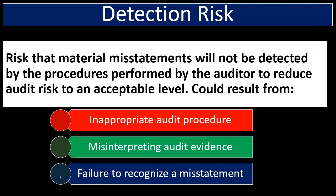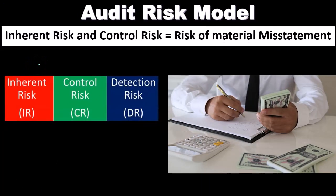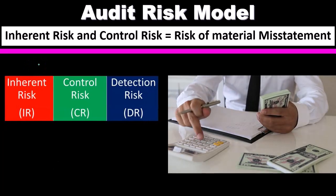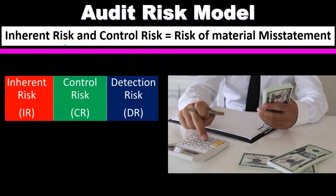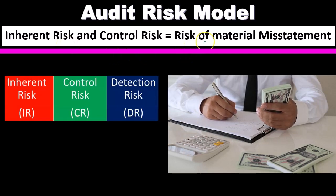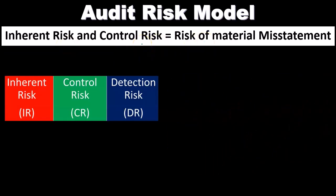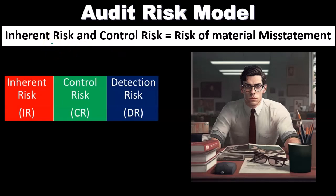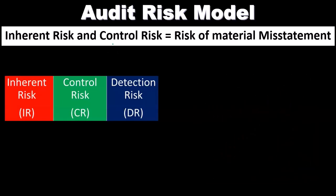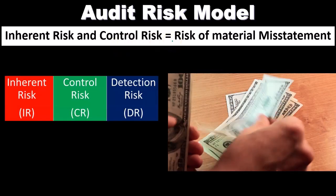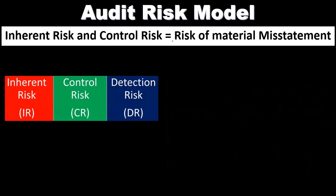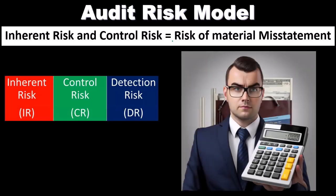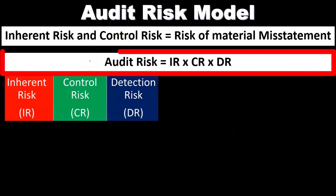In the audit risk model formula, inherent risk times control risk equals the risk of material misstatement. The inherent risk and control risk are essentially on the company's side — the industry they chose to operate in and the controls they implemented. This equals the risk of a material misstatement existing in the financial statements. Notice that detection risk is not part of this, because it represents the auditor's separate process.